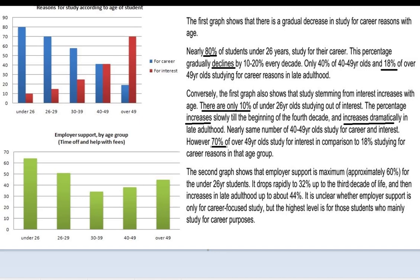When we get to the second chart, we start to see the maximum indicated — it's much better. And then we see 32, but there's no mention of whether that is a minimum or not. So be sure to indicate minimums and maximums on the chart.